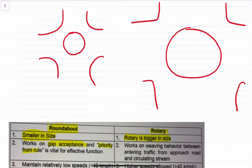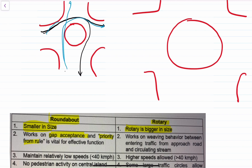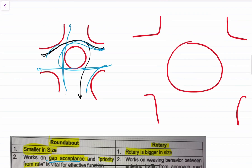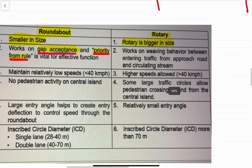The roundabout works upon the gap acceptance criteria. This means that if a vehicle is approaching from one direction and there is another vehicle approaching from another direction, one will slow down and the other will pass. So it works upon the gap acceptance criteria or the priority rule.